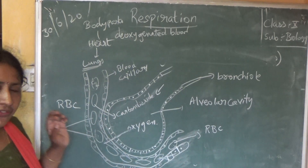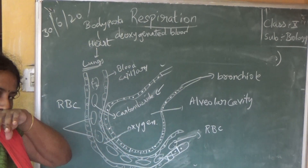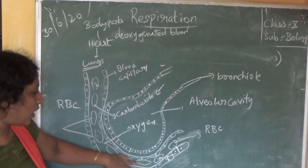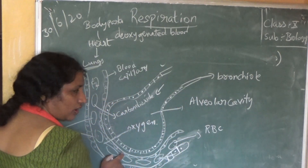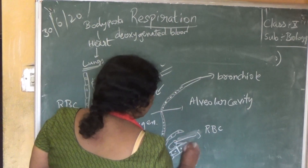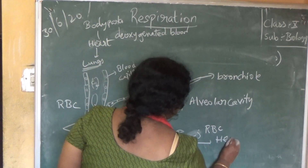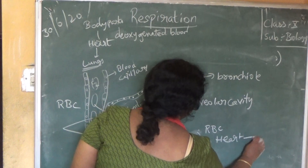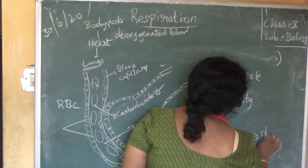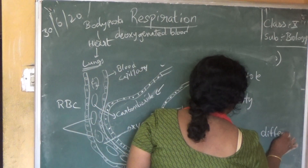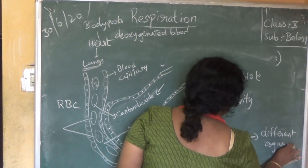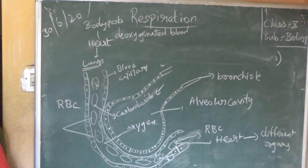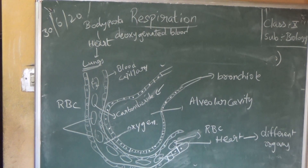Now the oxygenated blood — the RBC is oxygenated, the blood is oxygenated — again reaches the heart. From the heart it is pumped to the different organs of the body. This is about the gaseous exchange.